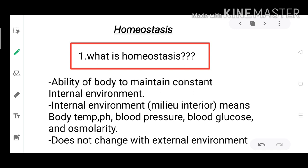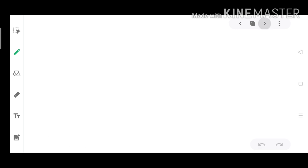Internal environment does not change with external environment. So homeostasis is the ability of body to maintain constant body temperature, blood pressure, blood glucose, and osmolarity.